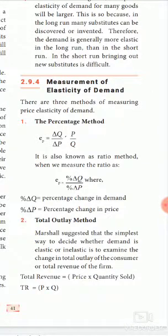In the first method, the percentage method, we use the formula: ep is equal to delta q divided by delta p, multiplied by p divided by q. It is also known as the ratio method, where ep equals the percentage change in quantity divided by the percentage change in price.